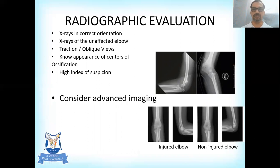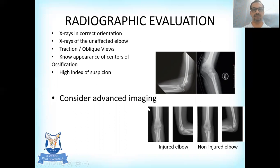It is important that x-rays are obtained in the correct orientation. Sometimes it is necessary to obtain x-rays of the unaffected elbow for comparison. As seen in this radiograph, the injured side shows a slight varus and possibly a fleck of bone not seen on the normal side — something is not correct. Sometimes it is necessary to obtain traction or oblique views. A high index of suspicion is very important.